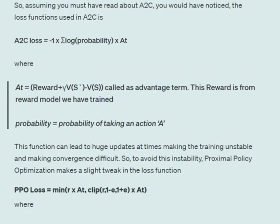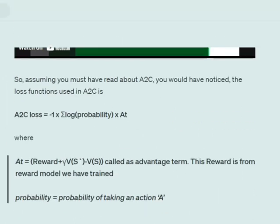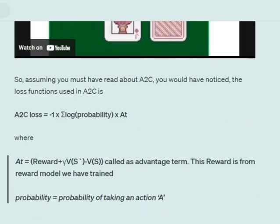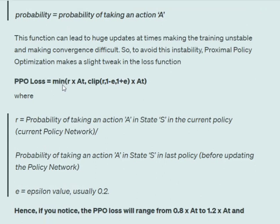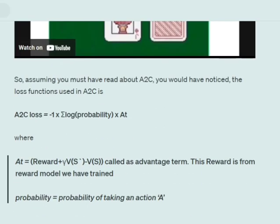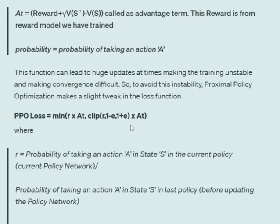In the case of proximal policy optimization, what we are doing is changing this particular loss function. So instead of using minus 1 into summation log probability into A(t), we are using: minimum of R into A(t) comma clip(R, 1-ε, 1+ε) into A(t). So we are trying to take the minimum of the two entities: R into A(t) or the clipped version of R into A(t).